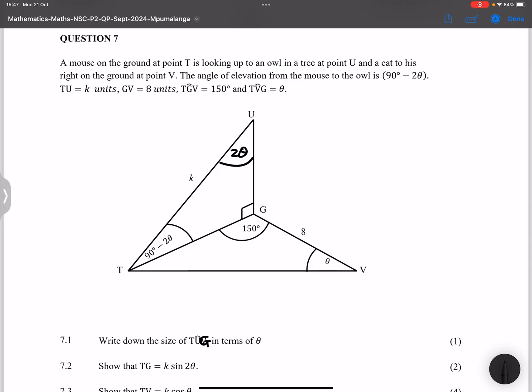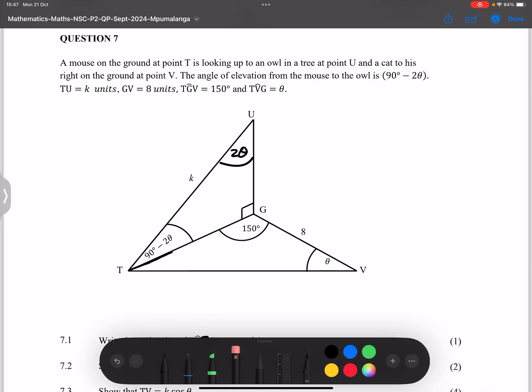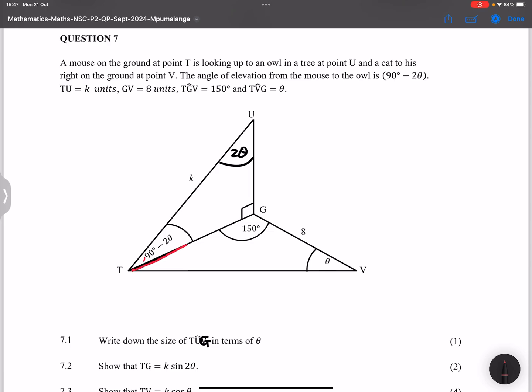And that's the only angle, well other than GTV, that you can actually get in this case using sum of angles in a triangle. Otherwise that would have really been a problem if you wanted to answer that question. Right, and so the next question says show that TG is equal to k sin 2θ. Now we're looking at TG which is a common side. Let me just use a different color.